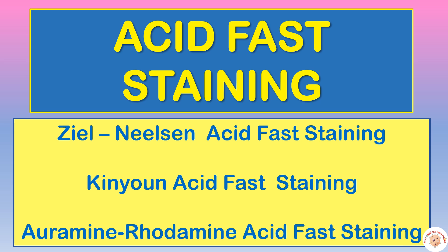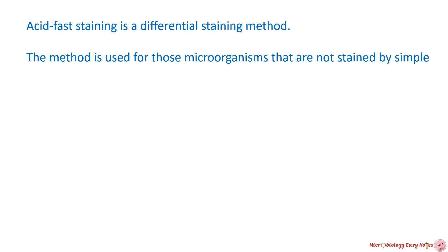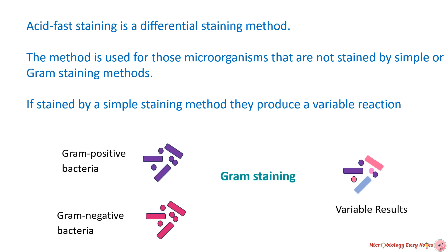So let's begin. Acid fast staining is a differential staining method. It is used for those microorganisms which are not stained by simple or gram staining method, or if they are stained by simple or gram staining method, they produce a variable reaction. Variable reaction means microorganisms look blue, pink, or purple under microscopic observation.